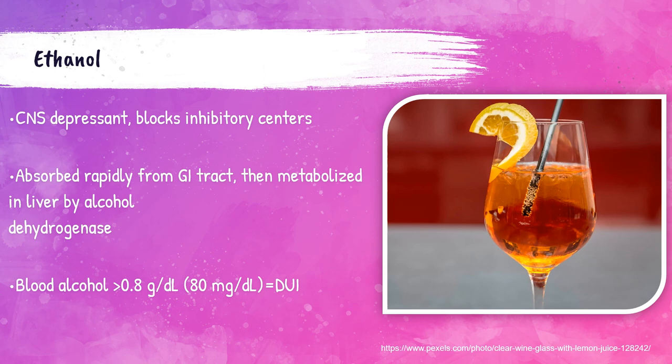Upon ingestion, ethanol is rapidly absorbed by the gastrointestinal tract and then metabolized in the liver. It is a depressant on the central nervous system by blocking inhibitory centers. It's critical when collecting a blood specimen for an ethanol test that the venipuncture site is cleaned with either betadine or soap and water — an alcohol pad is not appropriate. Ethanol is considered a volatile compound and the tube must be kept stoppered.